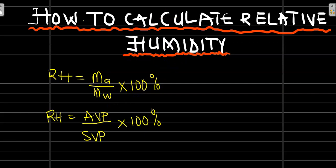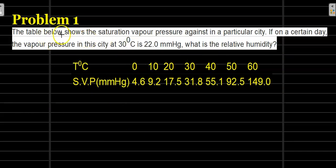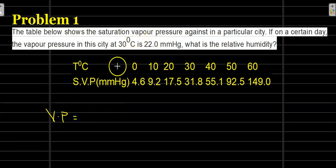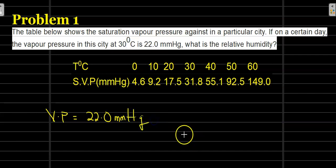Let's look at an example. The table below shows the saturation vapor pressure against temperature in a particular city. If on a certain day the vapor pressure in this city at 30 degrees Celsius is 22 millimeters of mercury, what is the relative humidity? The first thing we need to identify is the vapor pressure, which equals 22.0 mmHg at 30 degrees Celsius.